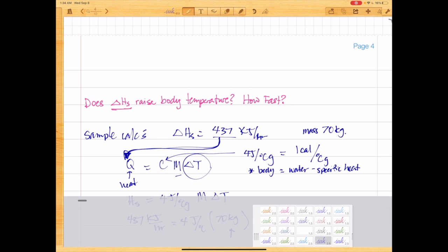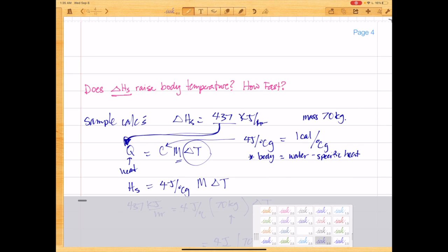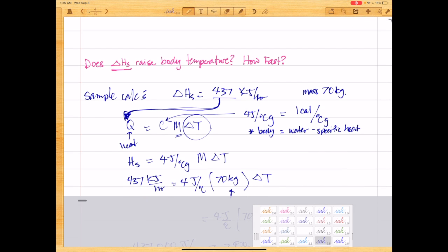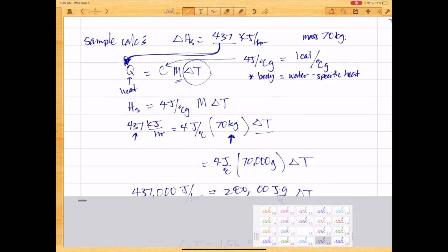So that's what C is, and then the mass is 70, and then the delta T is what we're solving for here. So putting those values in, HS equals 4 joules per degree Celsius per gram times mass times delta T. So putting in our known values, we can now solve for delta T.